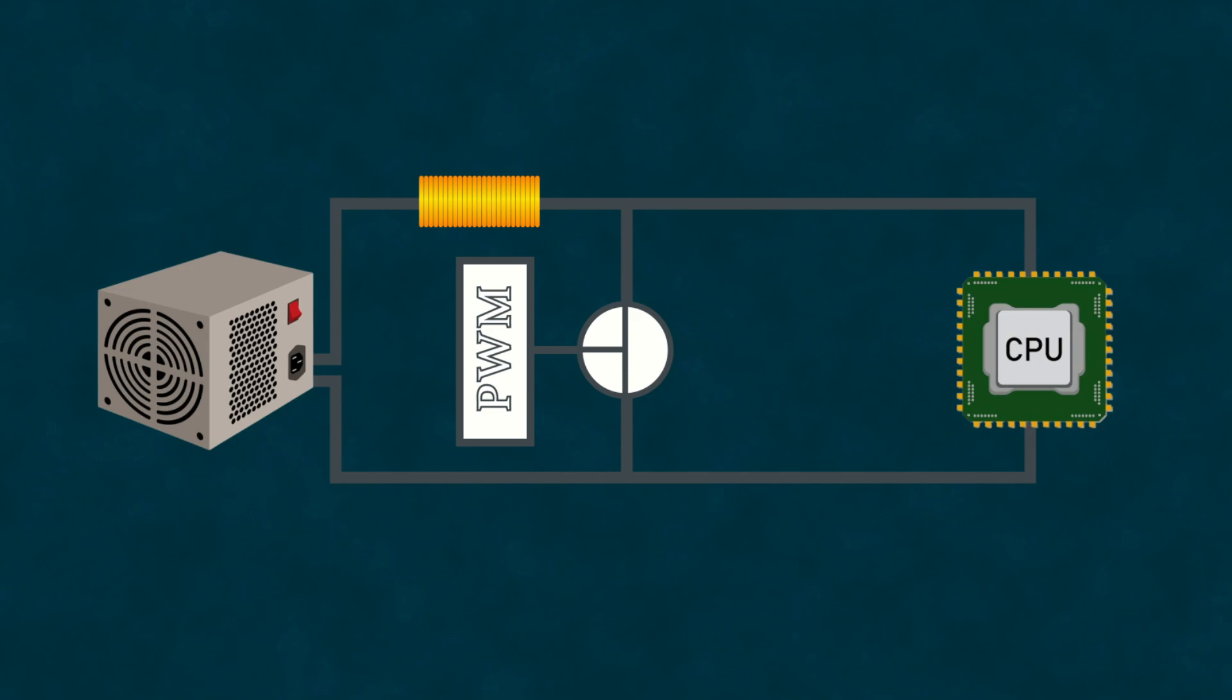Although the load won't receive power half of the time, we can easily fix this by adding a capacitor in parallel with the load. When the current flows through the long loop, it also charges the capacitor. And when the short loop is closed, effectively disconnecting the load from the power source, the capacitor discharges, supplying power to our load. Additionally, we need to add a diode to prevent the discharge current from flowing back into the main circuit. This completes our device known as a step-up DC-DC converter.